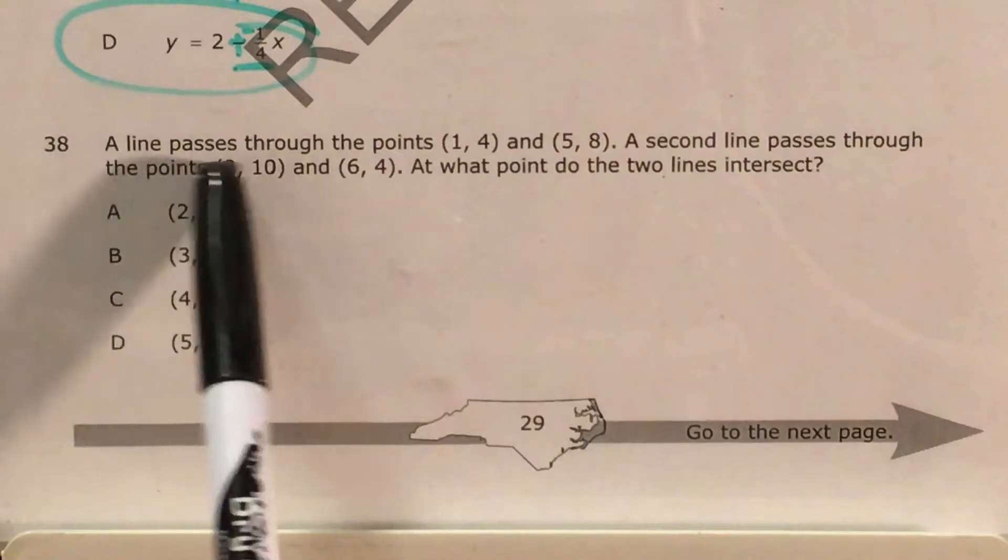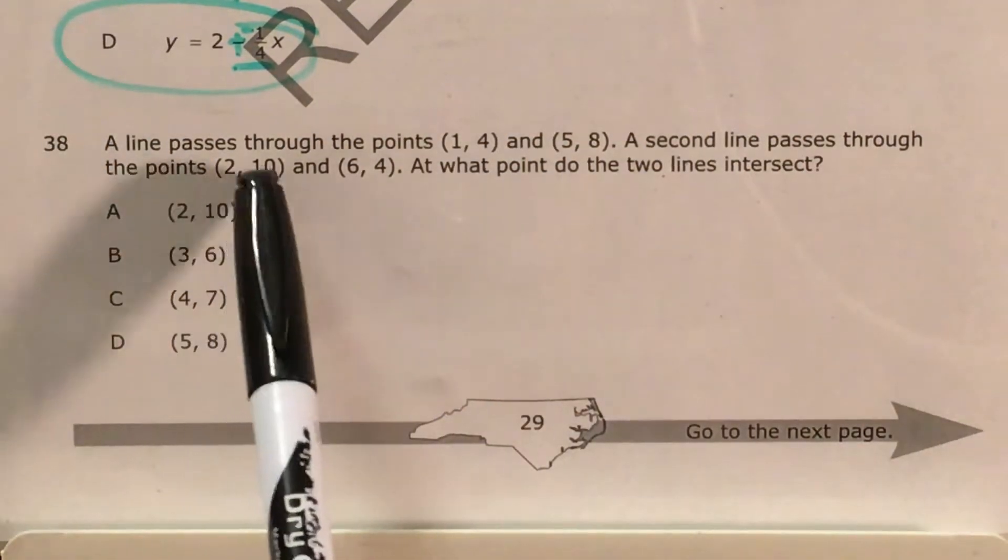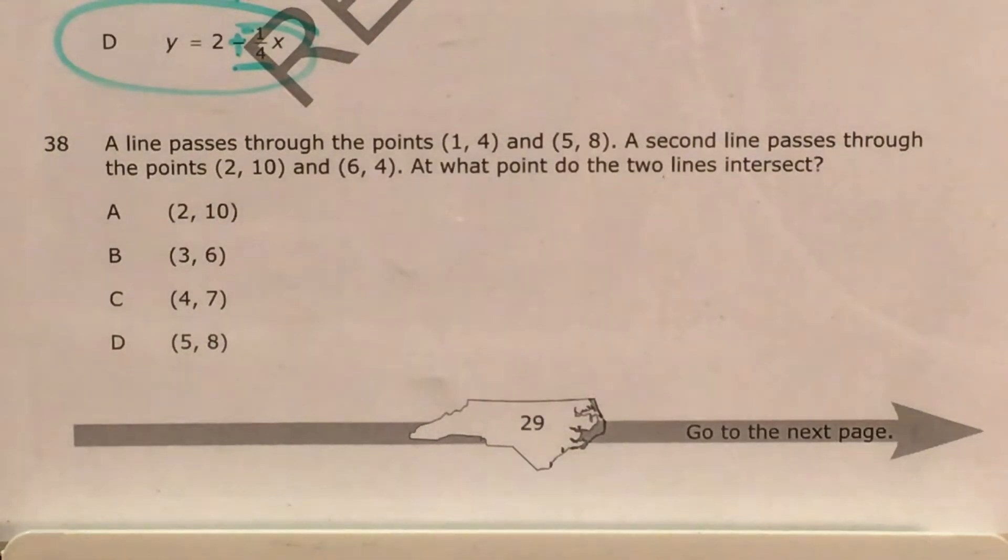The question tells us that a line passes through the points (1, 4) and (5, 8), and a second line passes through the points (2, 10) and (6, 4), and we're supposed to try to figure out at what point the two lines intersect.